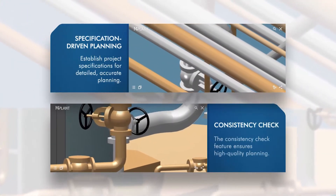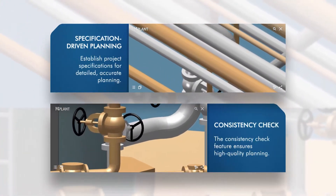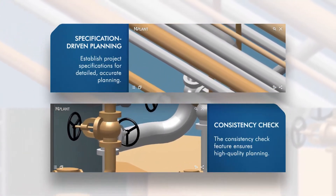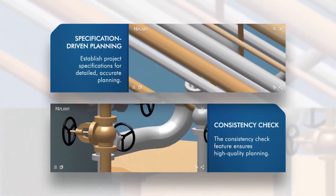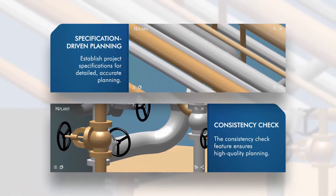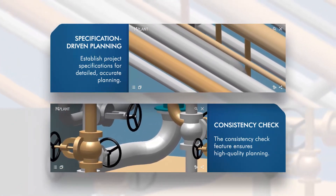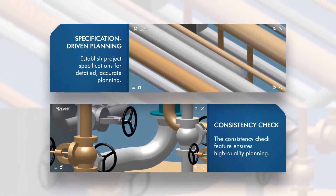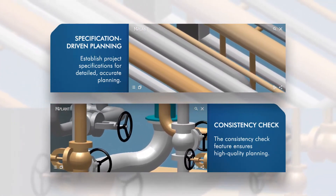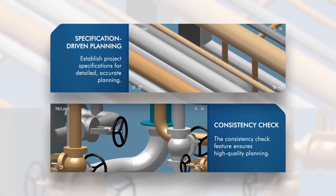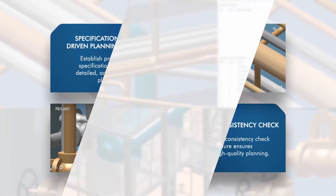Pipework design is specification-driven in M4Plant, allowing you to pre-define the range of component sizes and materials that can be used in your project. The ever-vigilant consistency checker additionally ensures that components are correctly put together.